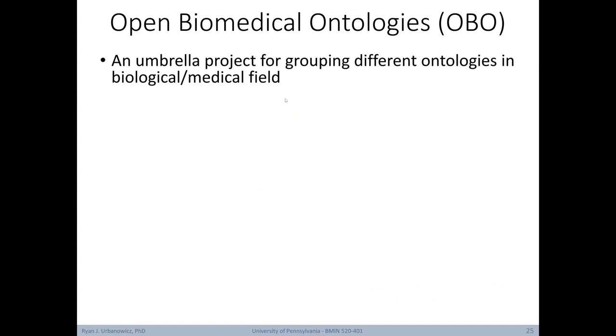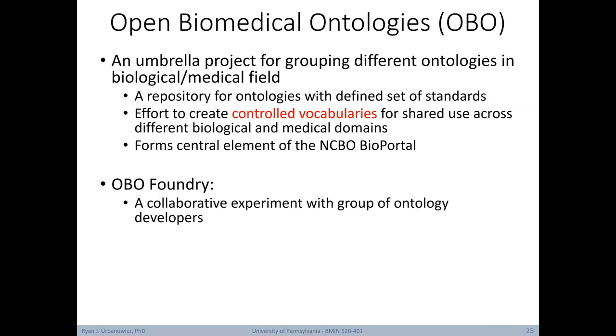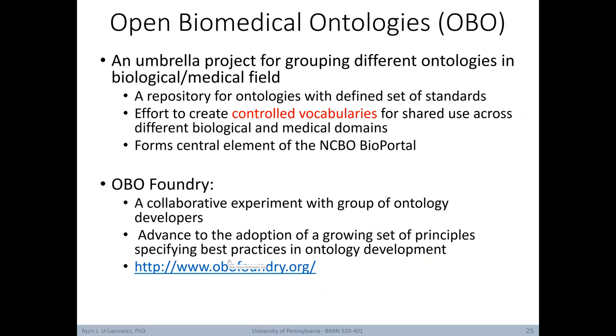The Open Biomedical Ontologies, or OBO, is an umbrella project for grouping different ontologies in the biological or biomedical fields. This includes a repository for ontologies with a defined set of standards. Ultimately, this is an effort to create controlled vocabularies for shared use across different biological and medical domains. The OBO forms a central element of the NCBO BioPortal. The OBO Foundry is a collaborative experiment with a group of ontology developers. Their goal is to advance the adoption of a growing set of principles specifying best practices in ontology development.